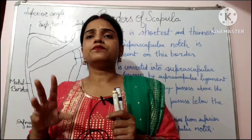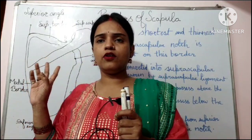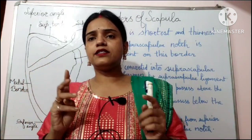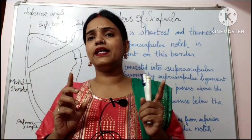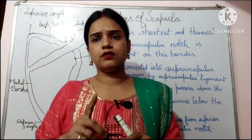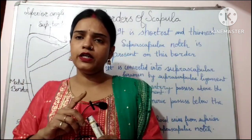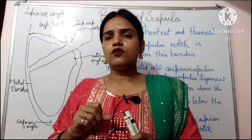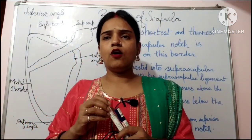The supra-scapular artery passes just above the supra-scapular ligament, and the supra-scapular nerve passes just below the ligament. Additionally, the inferior belly of the omohyoid muscle also arises from the superior border. This was all about the superior border.